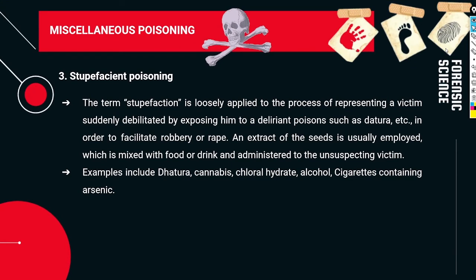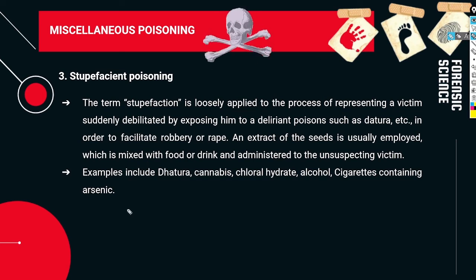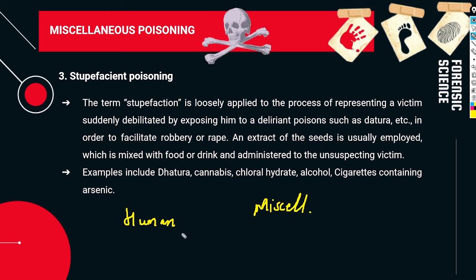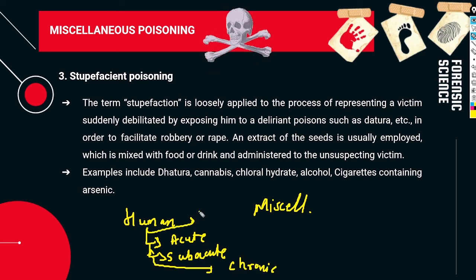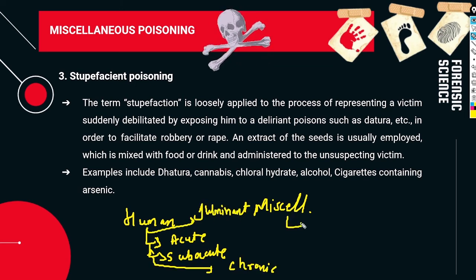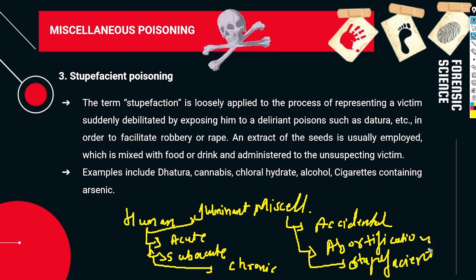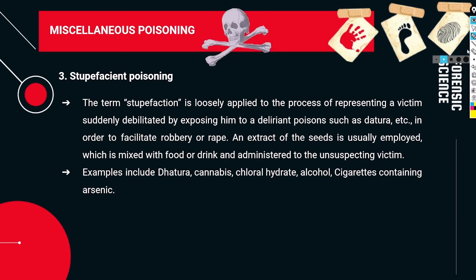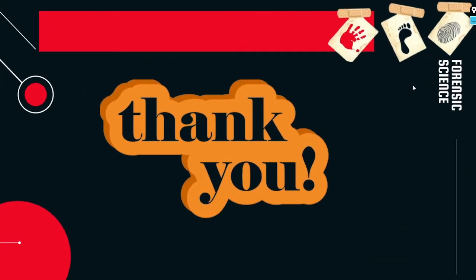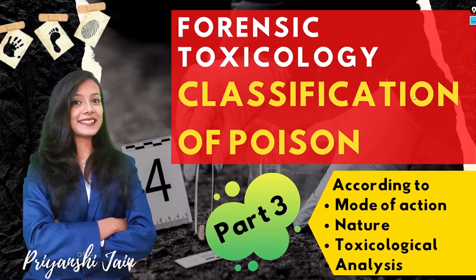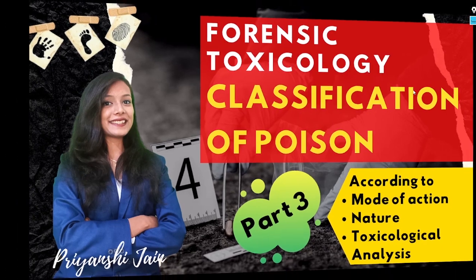To summarize: we studied classification of poisoning under human poisoning — which includes acute, subacute, chronic, and fulminating poisoning — and miscellaneous poisoning, which includes accidental, abortifacient, and stupefacient poisoning. In the next lecture we will cover the classification of poison. Thank you for watching — don't forget to like and share the video. Stay tuned and subscribe to the channel.